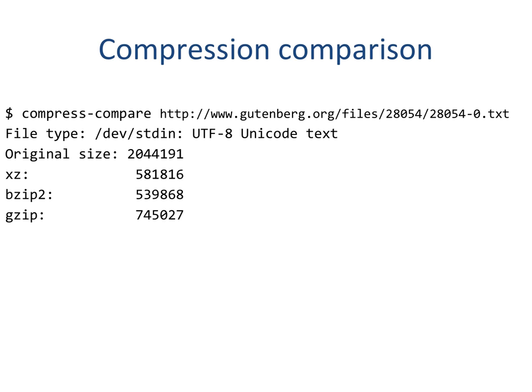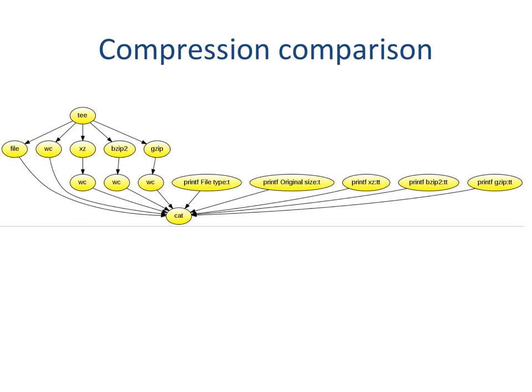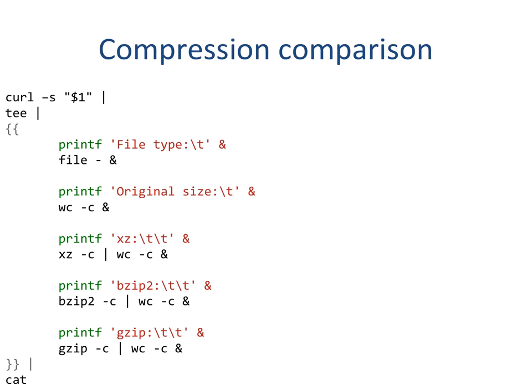As an example consider the problem of comparing the performance of various compression programs. This is the graph of the processing you want to perform. The same data are sent to all compression programs and then the results are gathered together into a single report. And this is how you express it in DAX: you pipe the output of T to various commands that run asynchronously within a multipipe block. The block is enclosed within a double opening brace and a double closing brace. Commands running before the block can pipe their output to multiple commands within the block, and commands piped from the output of the block can receive input from multiple commands.